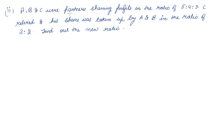Question 2: A, B, and C were partners sharing profits in the ratio of 5:4:3. C retired and his share was taken up by A and B in the ratio of 3:5.